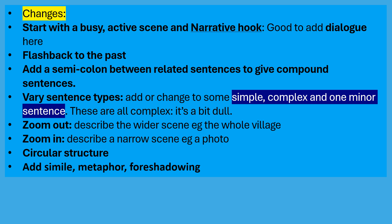These are the changes I suggest. Start with a busy active scene and a narrative hook — it's good to add dialogue here to show that you can. Flashback to the past next. Add a semicolon between related sentences somewhere in your writing to give compound sentences — maybe do that more than once. Vary sentence types; add or change to some simple, complex and one minor sentence. These are mostly or all complex and it's a bit dull. Zoom out — describe the wider scene, for example the whole village. Zoom in and describe a narrow scene, for example a photo. Give it a circular structure, so end up where you started. And don't forget language techniques as well as all the other structural techniques — for example, add simile, metaphor and foreshadowing.